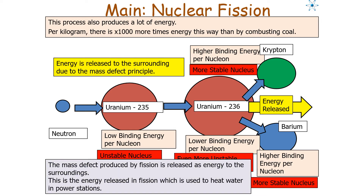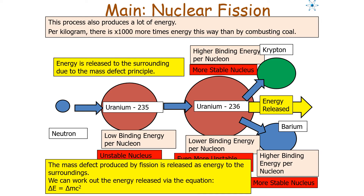The energy released in fission is what is used to heat water in nuclear power stations. This energy is found initially in the form of kinetic energy of the products or gamma photons. We can calculate the energy released using delta E equals delta mc squared, or in MeV as the mass defect in u times 931.3.